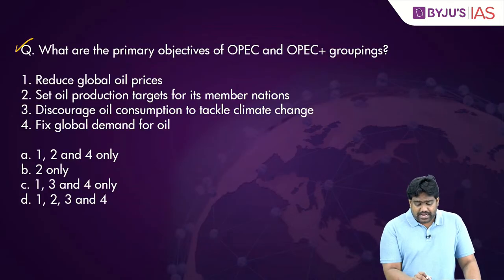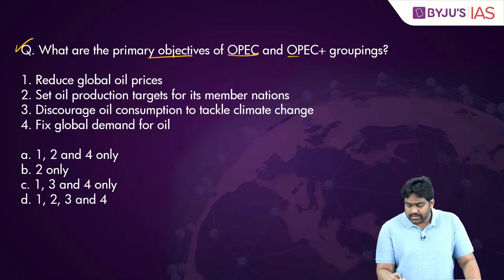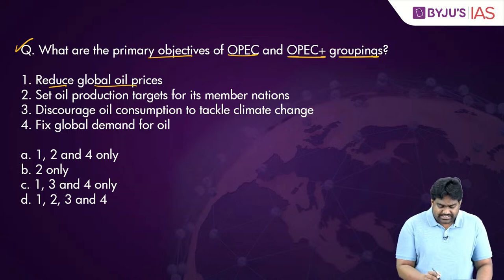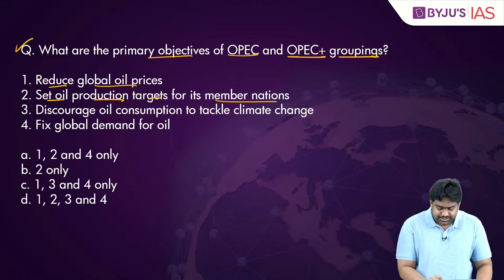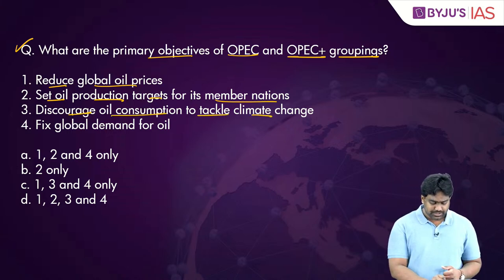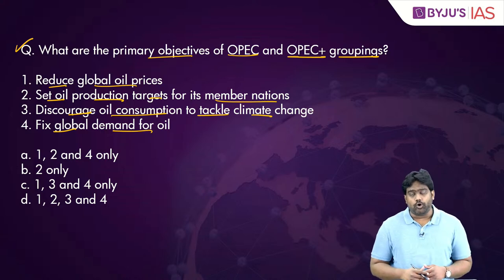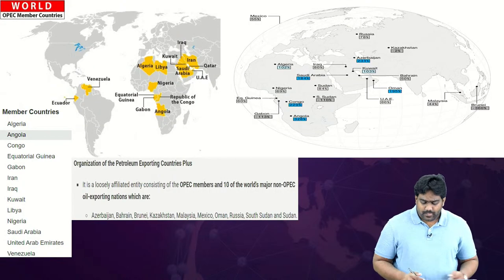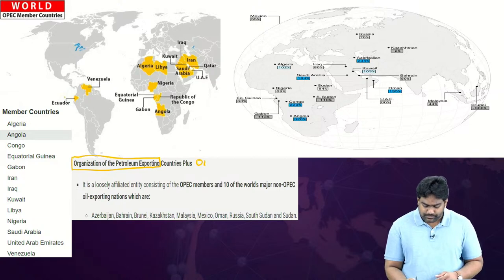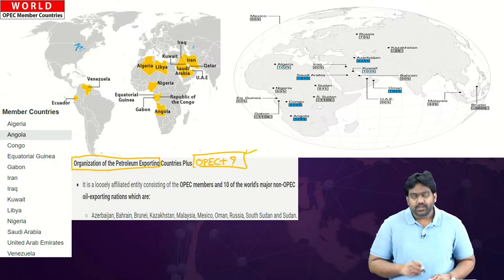The next question asks about the primary objectives of OPEC and OPEC-plus groupings: reduce global oil prices, set oil production targets for member nations, discourage oil consumption to tackle climate change, or fix global demand for oil. To answer this, we need to understand what OPEC and OPEC-plus are and what their objectives are.